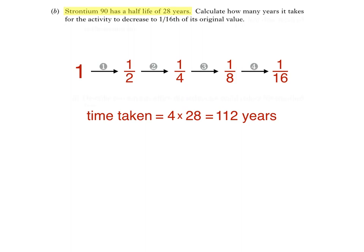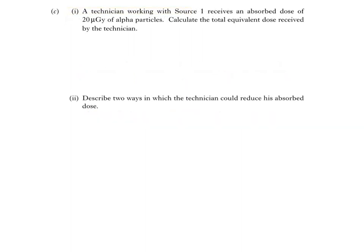Finally, we've got part C of the question. Part 1 says, A technician working with source 1 receives an absorbed dose of 20 micrograys of alpha particles. Calculate the total equivalent dose received by the technician. The equation we're using here is H equals D times omega R, where H is the equivalent dose in sieverts, D is absorbed dose in grays, and omega R is the radiation weighting factor for the radiation, alpha particles in this case.